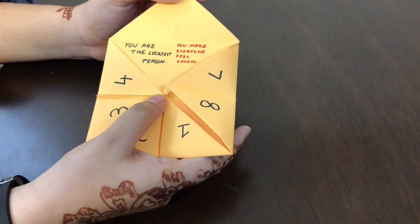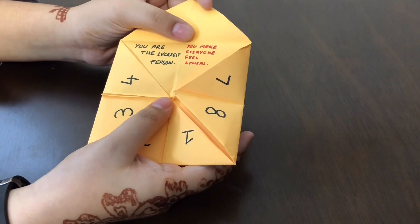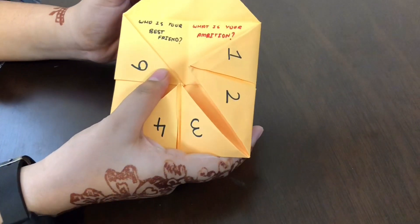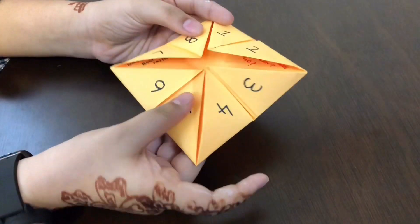Then here, I have written some things which can make the person you are playing with feel happy. Then the next thing I have written is 'who is your best friend' and 'what is your ambition.' So those are the questions and riddles I have written in this game.